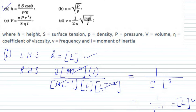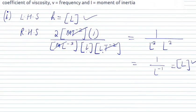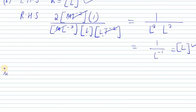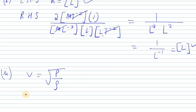Now Part B: V equals the square root of P over ρ, where P is pressure and ρ is density. Let's find out whether it is dimensionally correct. V is distance over time, so the dimensional formula for the left-hand side is LT⁻¹.